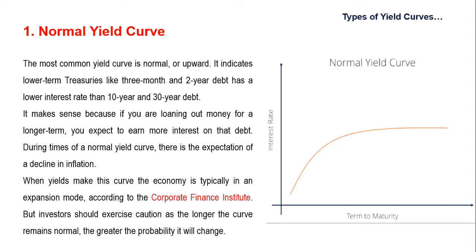The positively sloped yield curve is called normal because a rational market will generally want more compensation for greater risk. Long-term securities are exposed to greater risk, so the yield on such securities will be greater than that offered for lower-risk short-term securities. A longer period of time increases the probability of unexpected negative events, therefore a long-term maturity will typically offer a higher interest rate and have higher volatility.